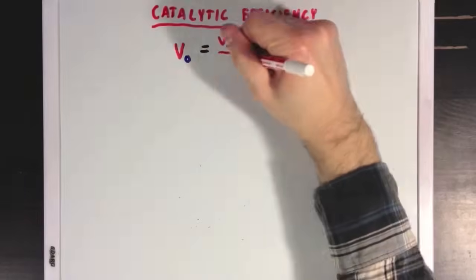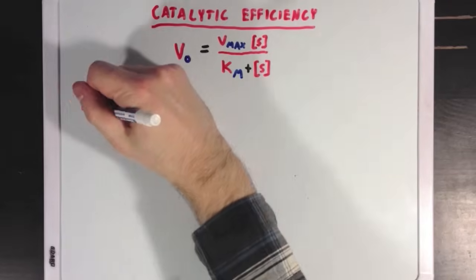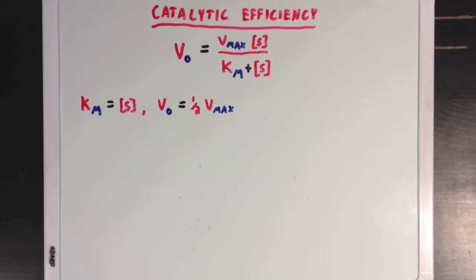So I'll rewrite the Michaelis-Menten equation. Remember, we defined KM as a substrate concentration, where VO is one-half Vmax, and since it's a concentration, it will be in units of molar, or moles per liter.